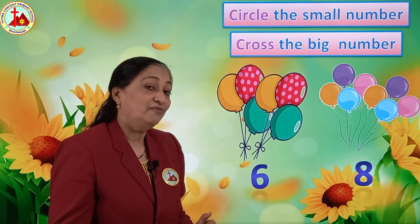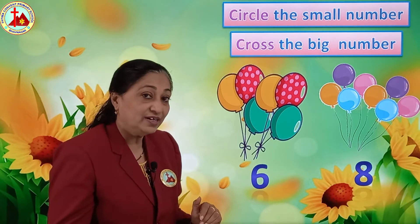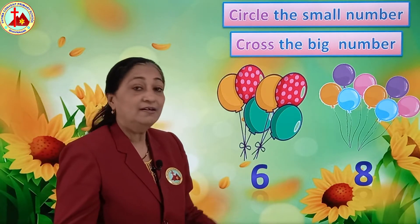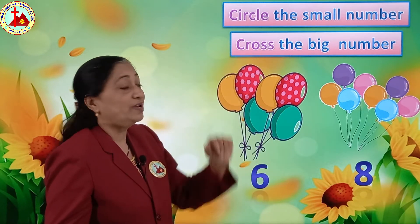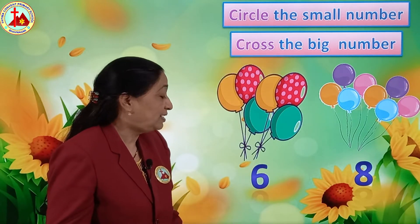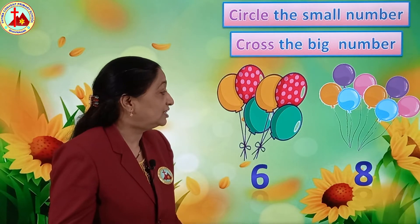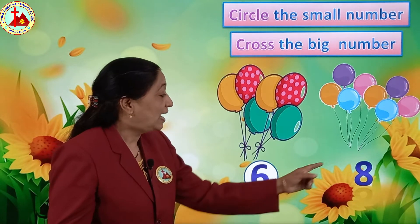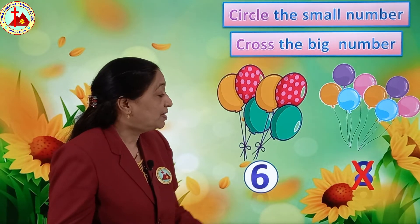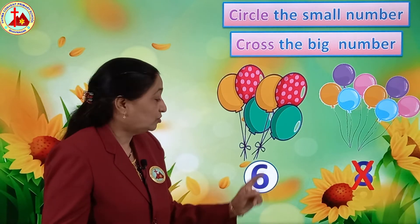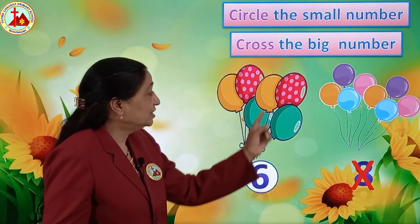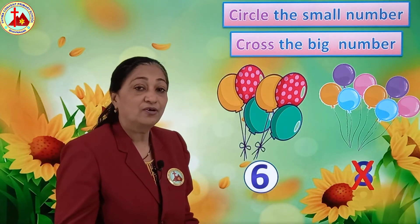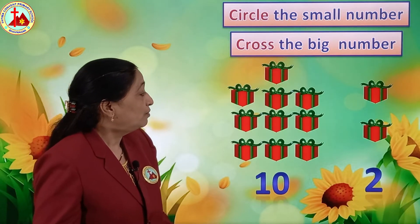And 8 comes after 6 - we say 6, 7, 8 - so it comes after 6, so it is a bigger number. So here also we are going to circle the small number. Number 6 is the smaller one and the bigger number is number 8. So we will put a cross on 8. Here there are few balloons and here there are many. So we have crossed the big number.